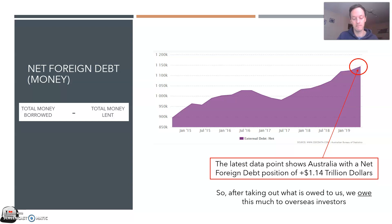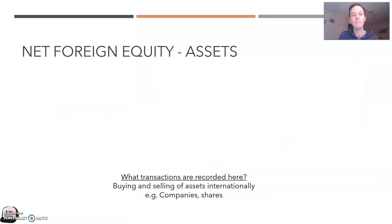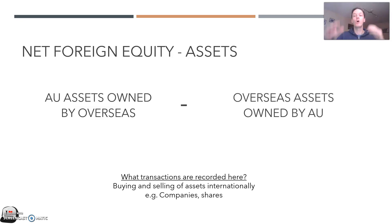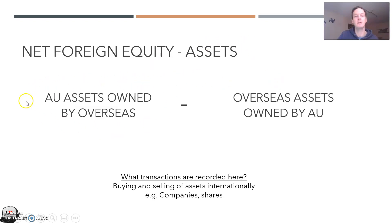Now we're going to move on to net foreign equity. If net foreign debt was all about money, net foreign equity is all about assets. The calculation is: Australian assets owned by overseas, minus overseas assets owned by Australians. Transactions recorded here are the buying and selling of assets internationally. Think about companies and shares — for example, if an American investor bought shares in an Australian company like Qantas, that's an Australian asset owned by overseas, making the first number bigger.